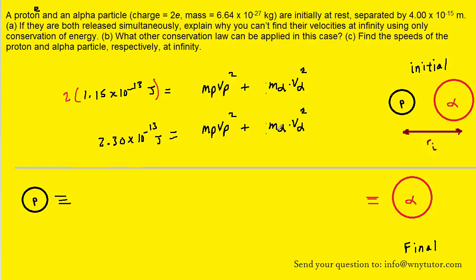For part A, conservation of energy isn't enough because one equation with two unknowns will not allow us to solve for the unknowns. For part B, the other conservation law that can be applied is conservation of momentum, and that's what we're going to use to find their speeds for part C.